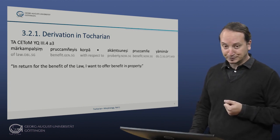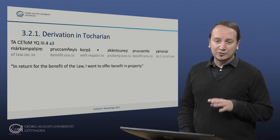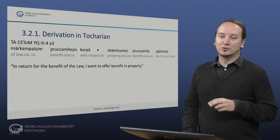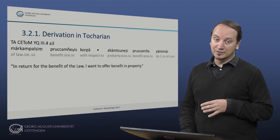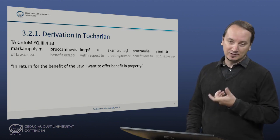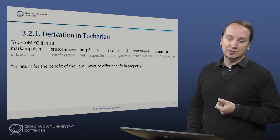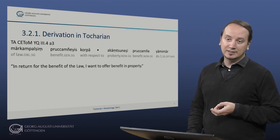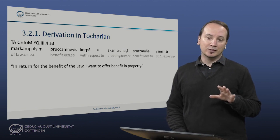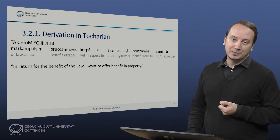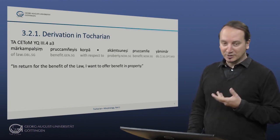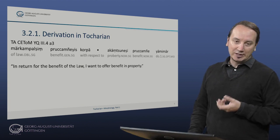Let's look at some examples. This first example is from Tocharian A. The press mark you see here is new — it stands for a larger manuscript for which we have several leaves. YQ means Yanqi, which is a place in China where this manuscript was discovered fairly recently, in 1974. This manuscript belongs to a Buddhist play called Maitreya Samitinathaka, the getting-together with the Buddha of the future, namely Maitreya, who was venerated as a savior.